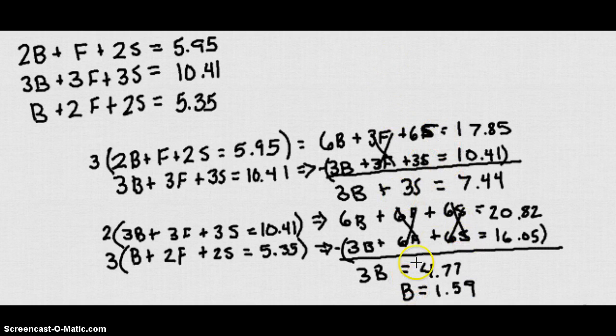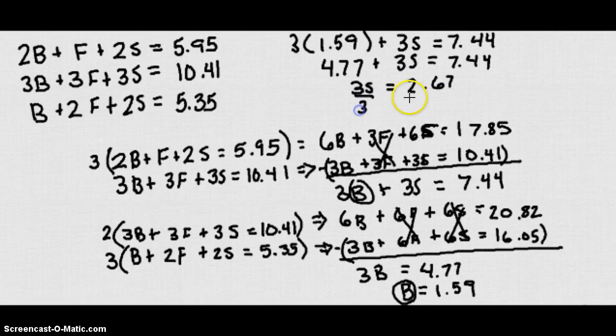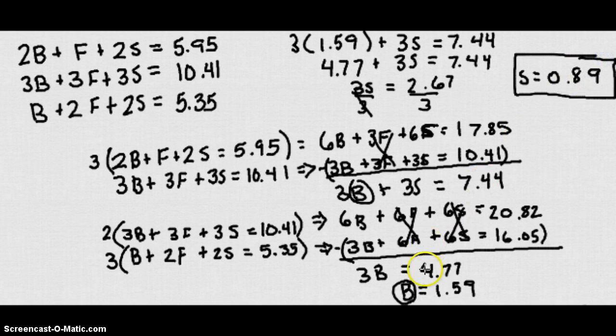Now I know B, I can plug this B in, so let's do that. We know that 3 times 1.59 plus 3S equals 7.44, so 4.77 plus 3S equals 7.44. Subtract 4.77 from each side we get 3S is equal to 2.67. Let's divide both sides by 3. We end up getting S is equal to .89 or 89 cents.